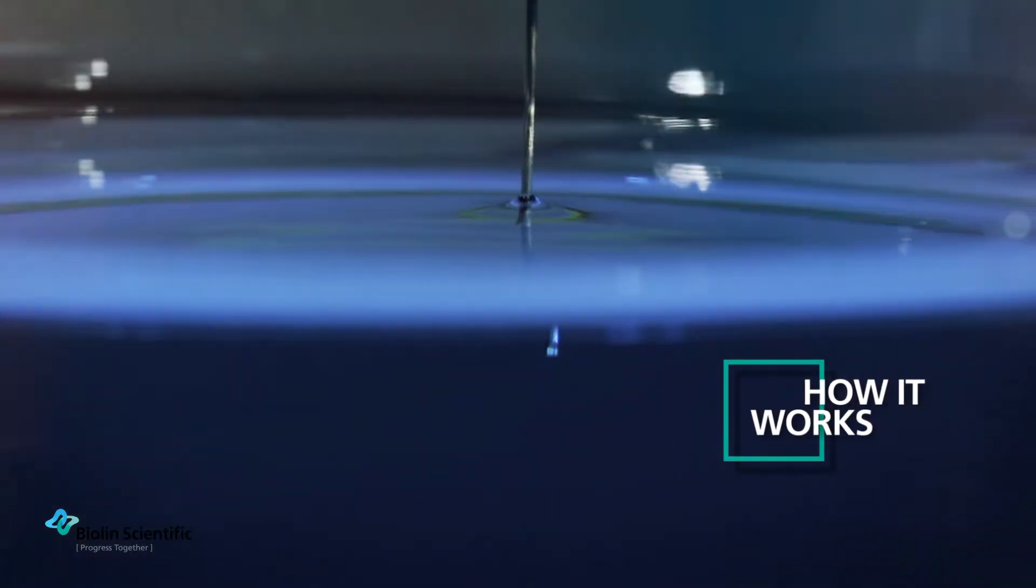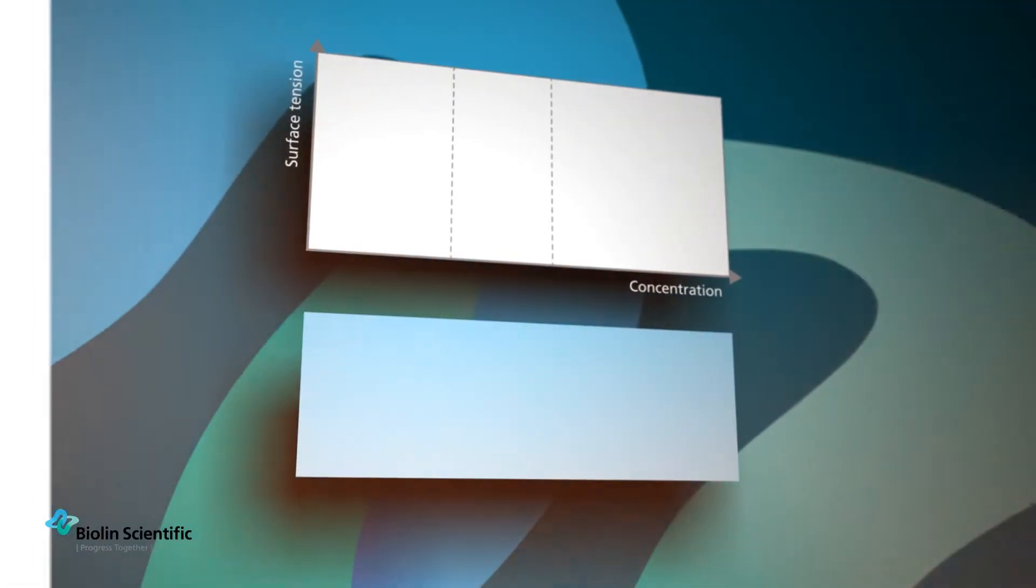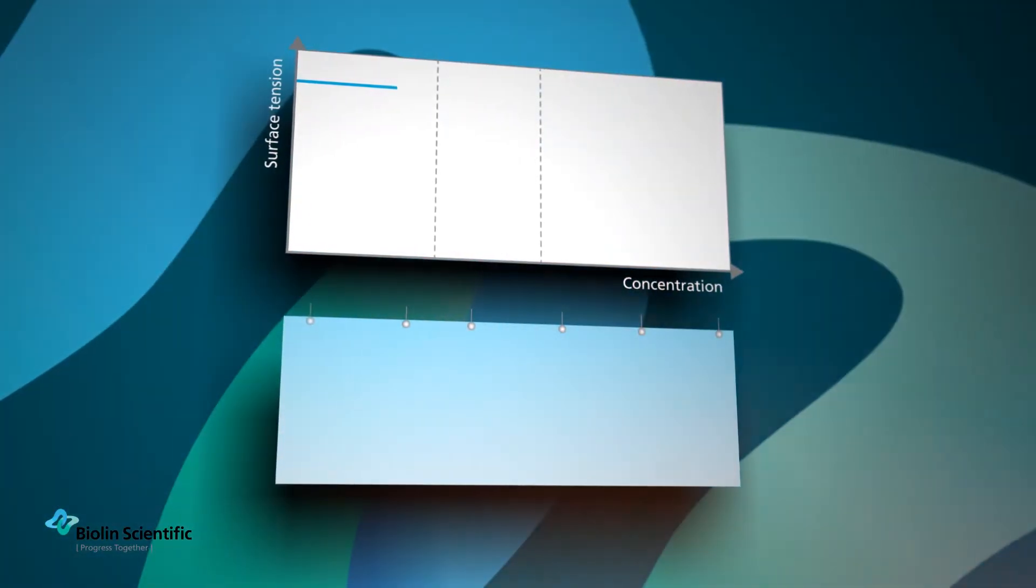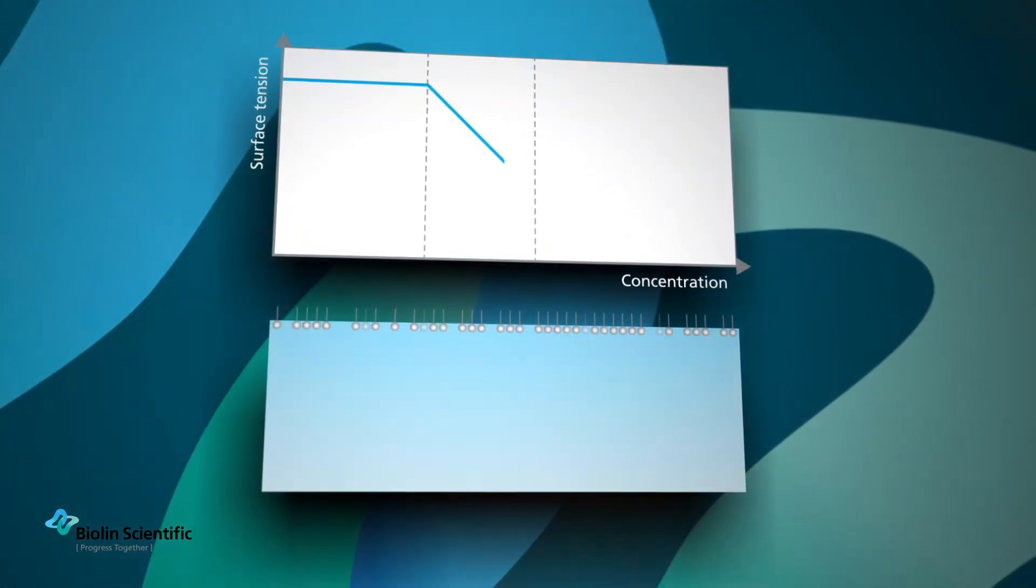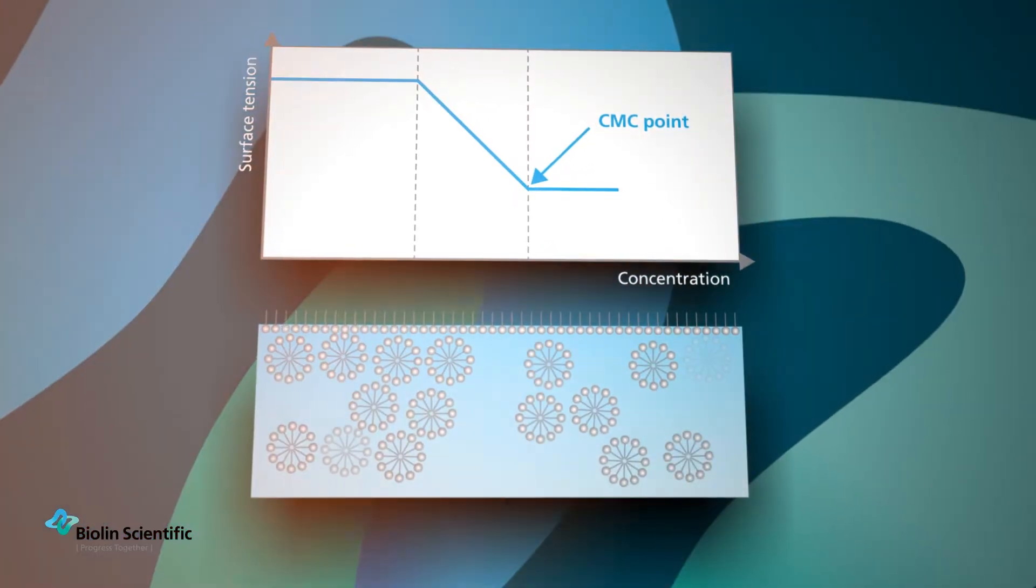To determine the optimal amount of surfactant that should be used in industrial processes, Sigma's can automatically measure the critical micelle concentration or the CMC. This value is used to determine the concentration after which adding more surfactant no longer has a significant effect on its surface activity.